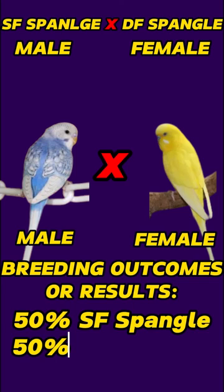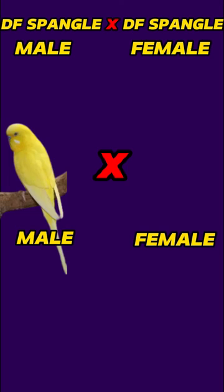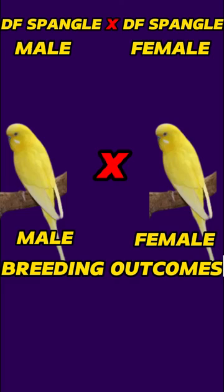Last pairing: the male is a double-factor spangle budgie and the female is a double-factor spangle budgie. The breeding outcomes or results are 100% chicks are double-factor spangle budgies. In the next video we'll discuss further breeding outcomes and results.